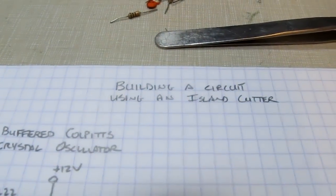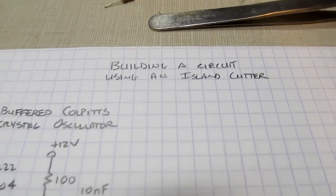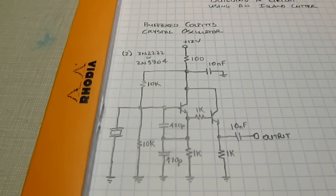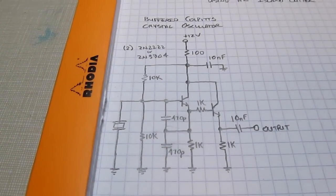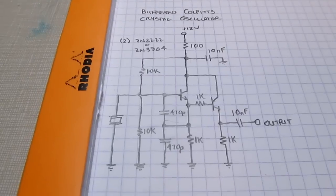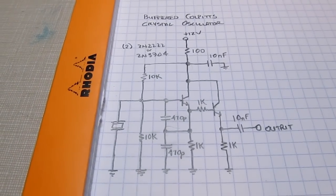So we'll focus on building a circuit using the island cutter. The circuit we're going to build is a buffered Colpitts crystal oscillator, and this circuit comes right out of Wes Hayward's book, Experimental Methods in RF Design.